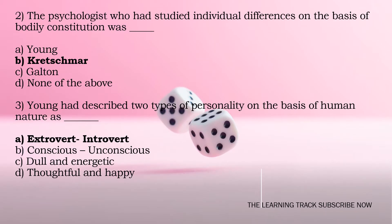Second question: The psychologist who had studied individual differences on the basis of bodily constitution was dash. The options are Young, Kreshmar, Galton, none of the above. The answer is Kreshmar.